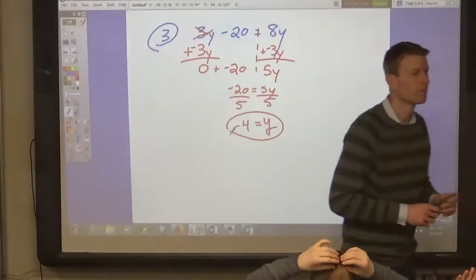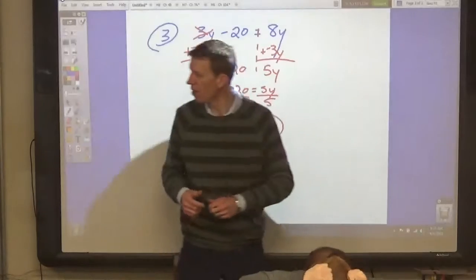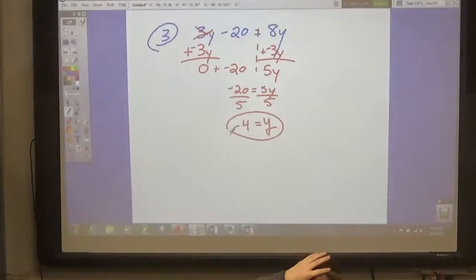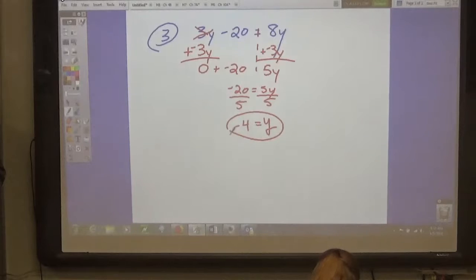Danny? You have to check. Ah, let's see. It just says solve these, so we're not going to check them. Okay? Number 4. X minus 7 equals 2x minus 6.